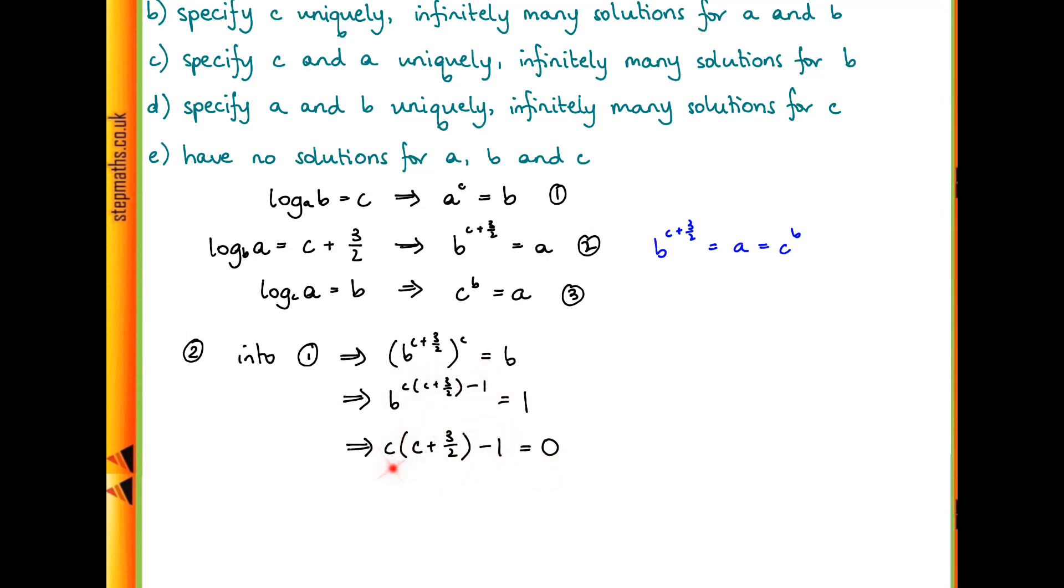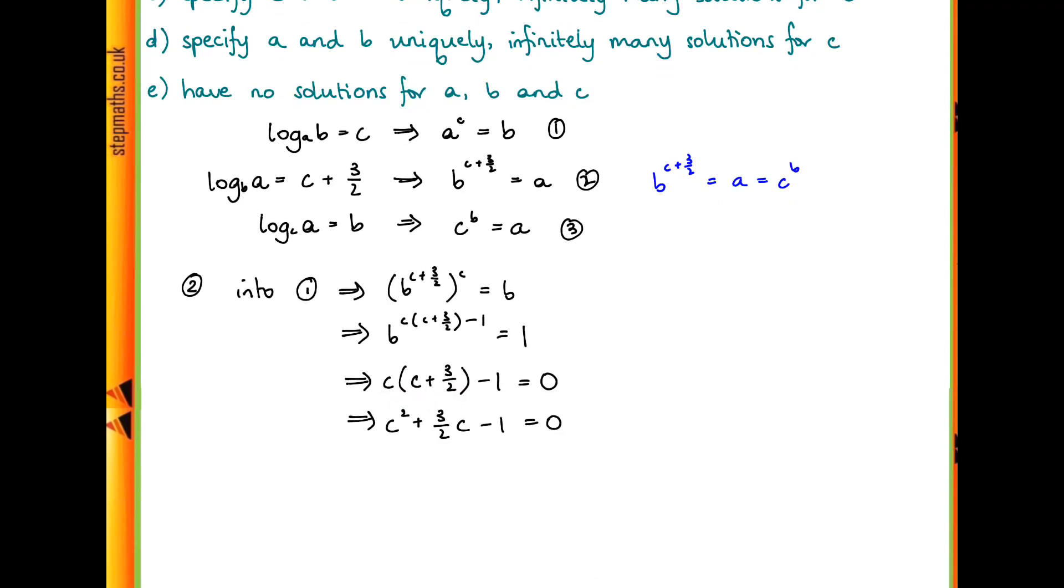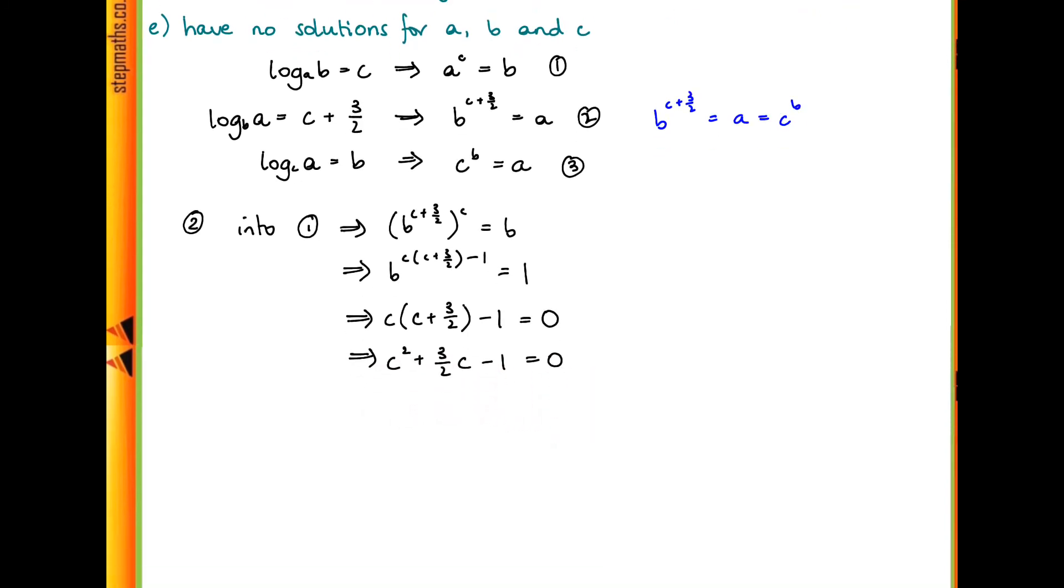This on the left-hand side is just a quadratic in c, and we can solve that. We can expand this bracket out and get c squared plus 3 over 2c minus 1 equal to 0. I prefer working with whole numbers, so I'm going to multiply through by 2. That will leave us with 2c squared plus 3c minus 2 equals 0. Using the quadratic formula, we get that c is equal to minus 3 plus or minus root 9 plus 16, which is just 25, all over 4.